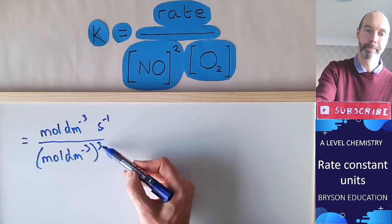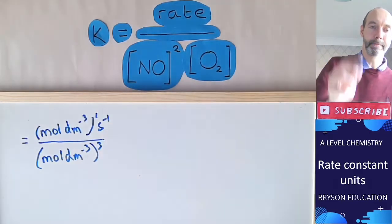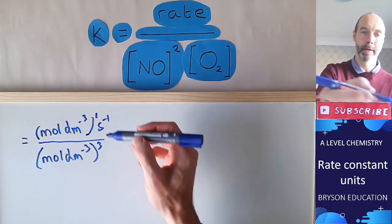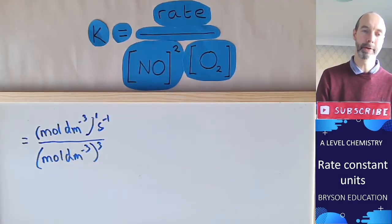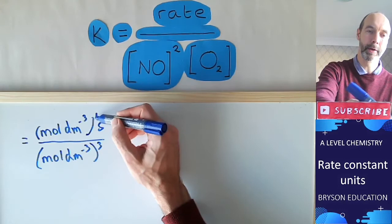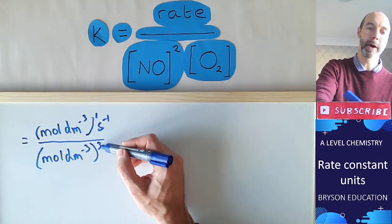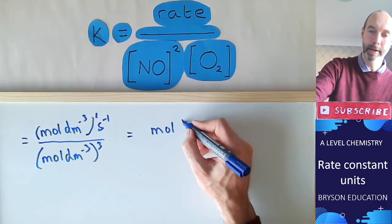What we can do is use our law of indices because the top line only has one concentration in it. One minus three is minus two, so we're using that law of indices: concentration to the power of one divided by concentration to the power of three. One minus three is minus two.